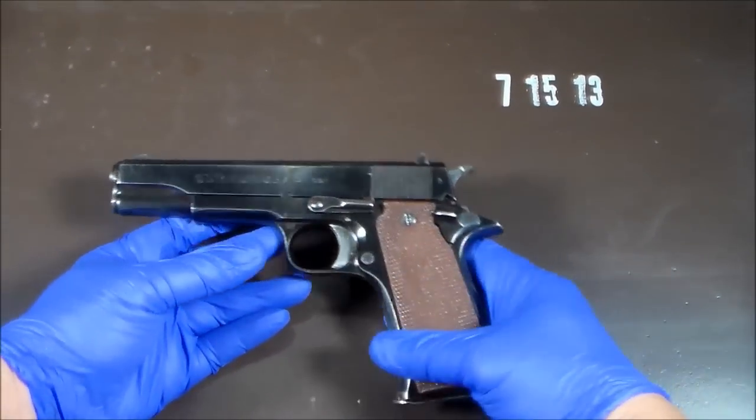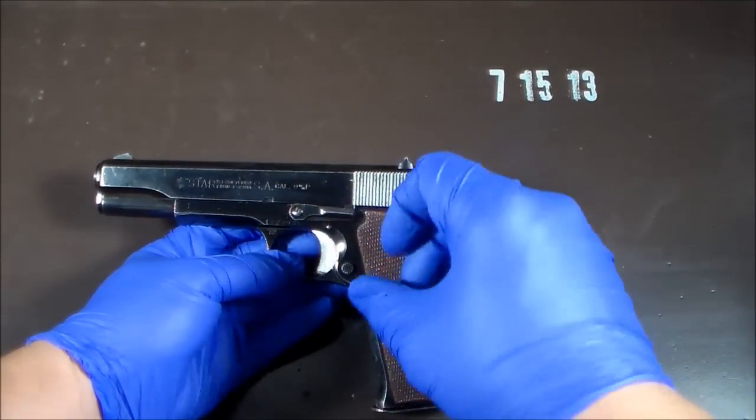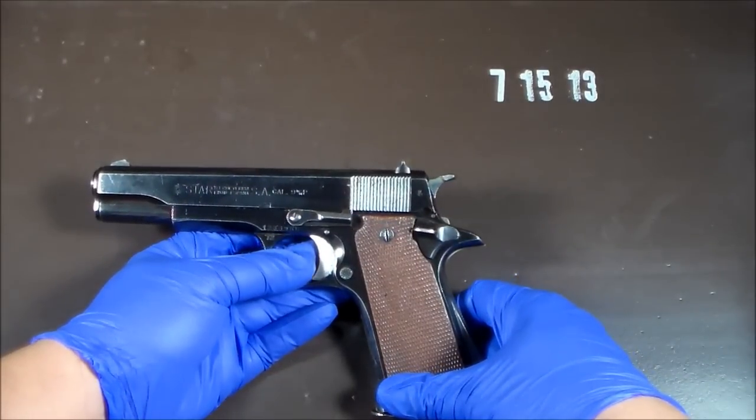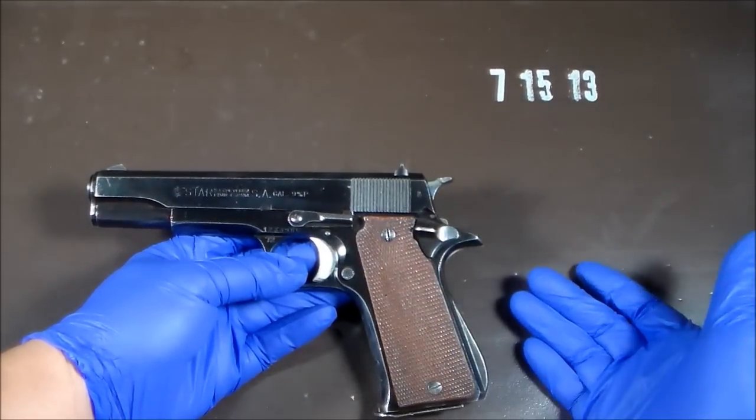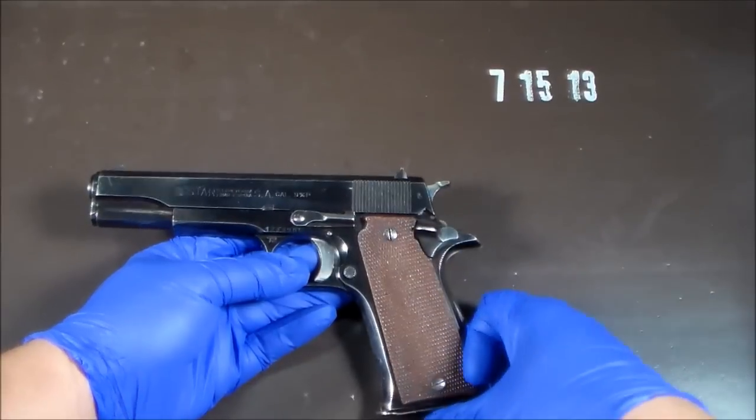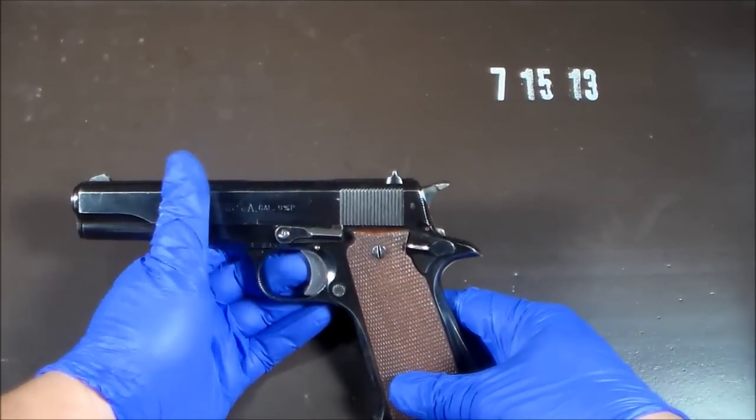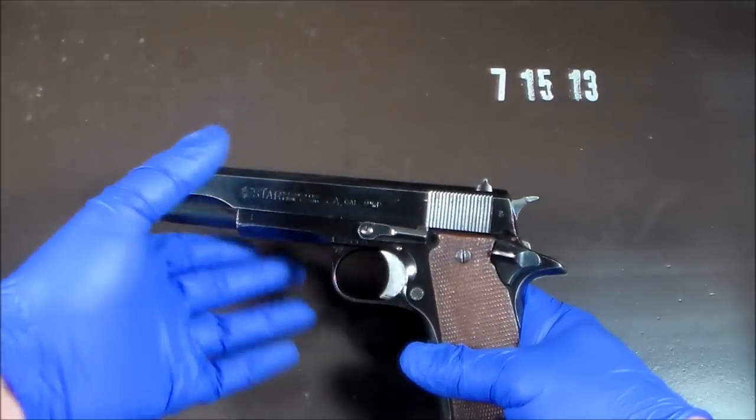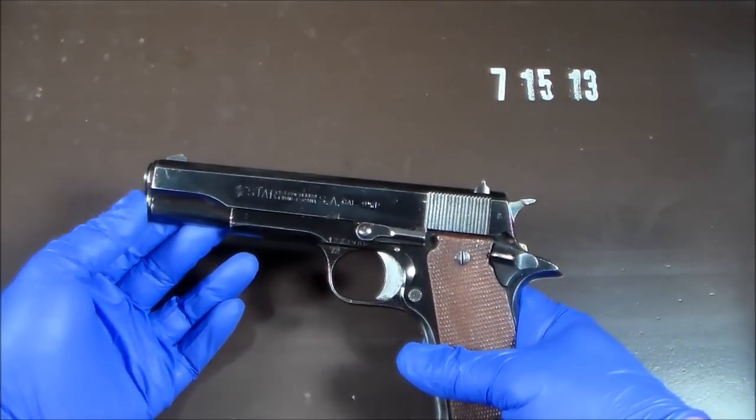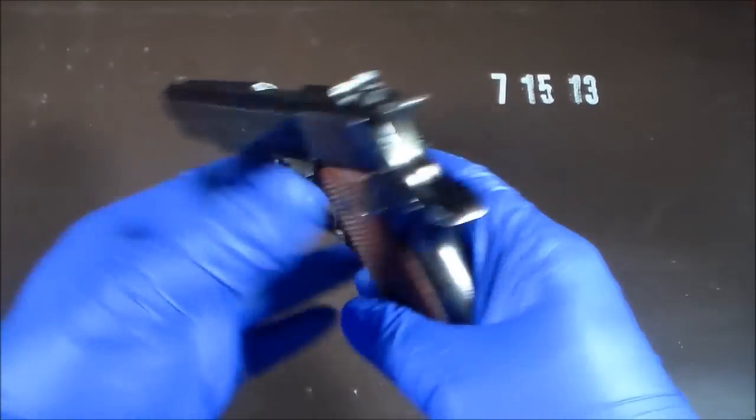So why did I purchase this gun? This has been selling for AIM Surplus for like $239, plus shipping, like $17 shipping. But this has been selling for around $300, or more than $300 on Gun Broker.